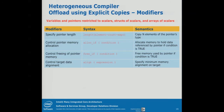Pointers are evil — C doesn't have true arrays, only pointers with pointer arithmetic. So the compiler typically doesn't know how long an array is and cannot figure it out. So you can specify the length of the data behind the pointer as additional clauses. 'Alloc if' is also something you will need for the lab.